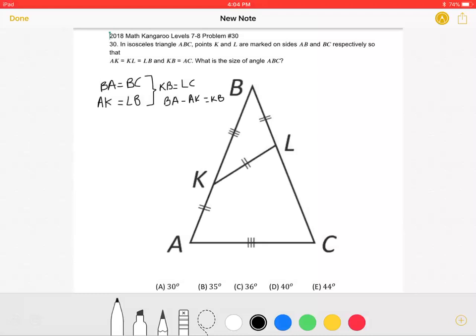In isosceles triangle ABC, points K and L are marked on sides AB and BC respectively, so that AK equals KL equals LB, and KB is equal to AC. What is the size of angle ABC?